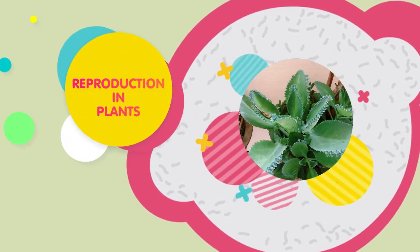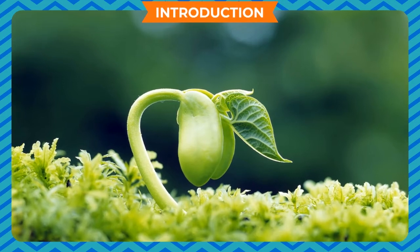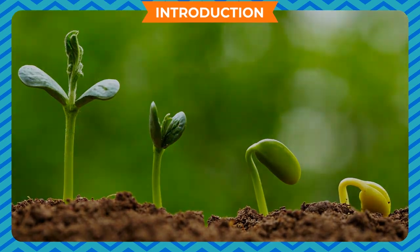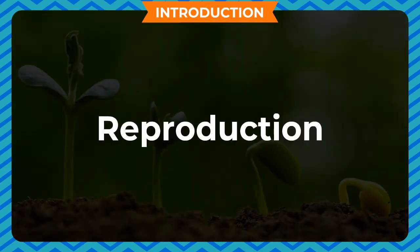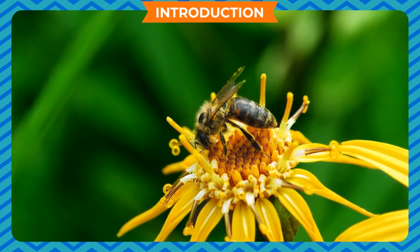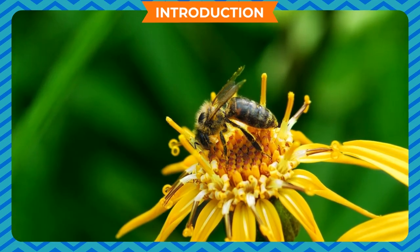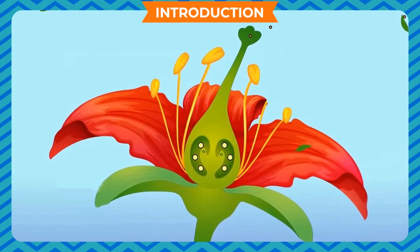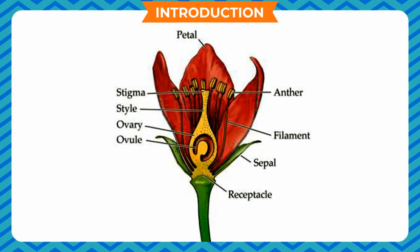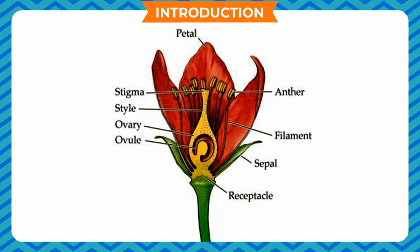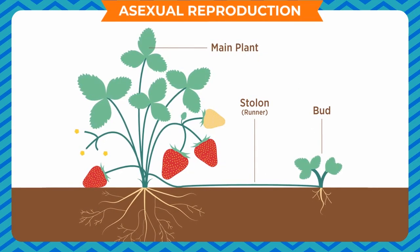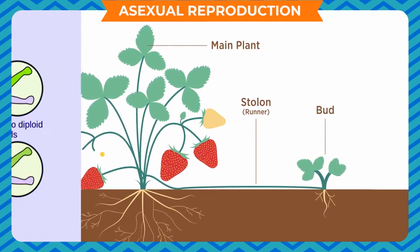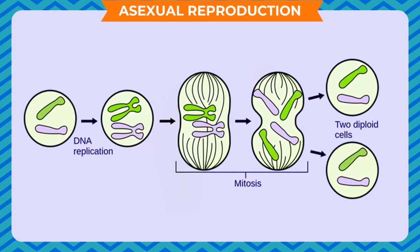Reproduction in Plants. Asexual Reproduction is the simplest form of reproduction in which only one parent is involved. It produces offspring which is exactly similar to the parent.